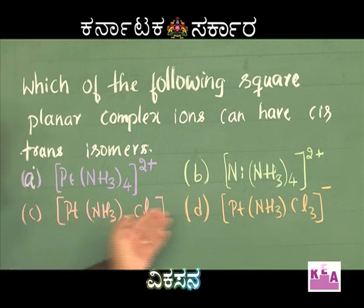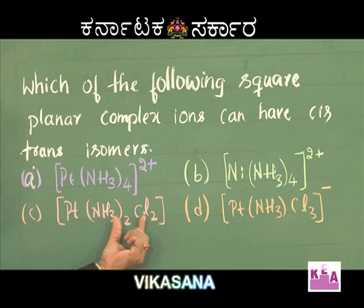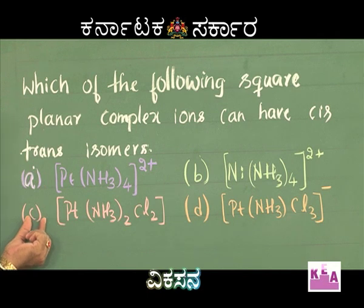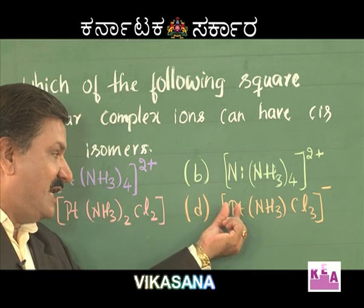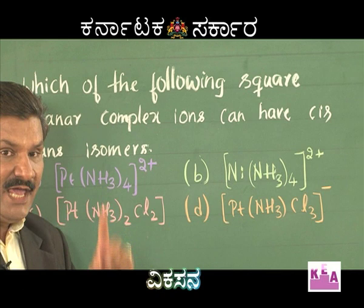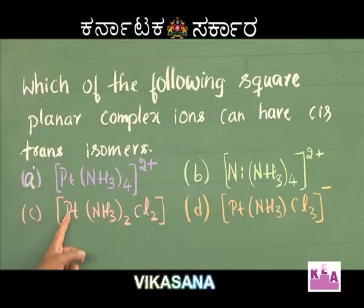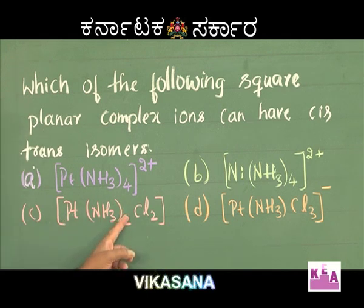Options C and D are heteroleptic complexes having two different ligands. However, option C is a complex of the type MA₂B₂, while option D is a complex of the type MAB₃. A complex of the type MAB₃ cannot exhibit geometrical isomerism, while a complex of the type MA₂B₂, which is a heteroleptic complex, can exhibit geometrical isomerism.